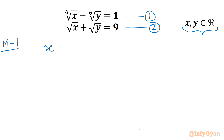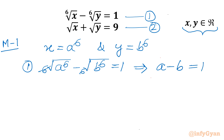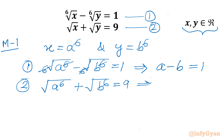In Method 1 I will use substitution: x equals a to the power 6, and y equals b to the power 6. Writing equation 1 in variables a and b, it becomes the 6th root of a⁶ minus the 6th root of b⁶ equal to 1, so from this equation I can write a minus b equals 1, since the power 6 cancels with the 6th root. For the second equation, the square root of a⁶ plus the square root of b⁶ equals 9, giving us a³ plus b³ equals 9.